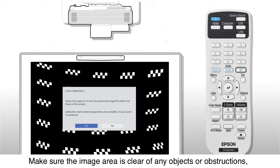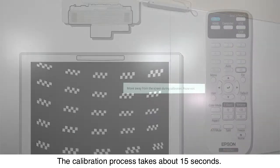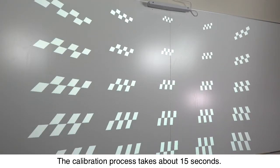Make sure the image area is clear of any objects or obstructions, then select Yes to begin. The calibration process takes about 15 seconds. When the patterned images disappear, the process is complete.